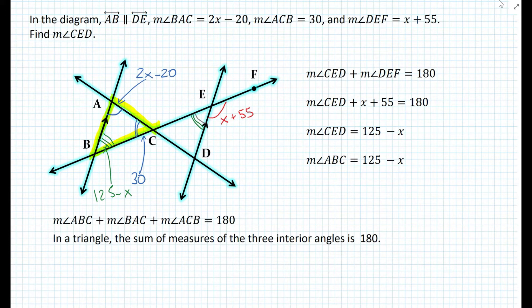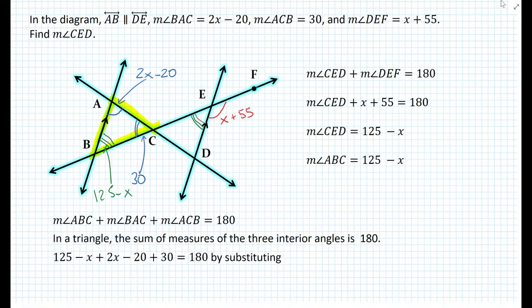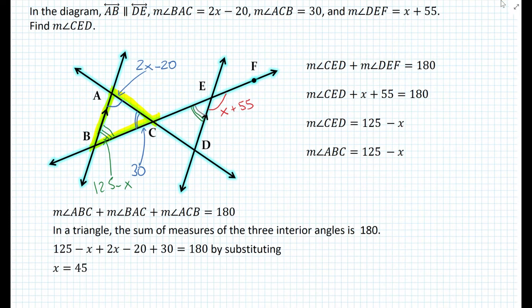That's something we learned in the previous video. So at this point, all we need to do is substitute the values. We obtain 125 minus x plus 2x minus 20 plus 30 is equal to 180. Bringing all the unknowns to the left and the constants to the right, we obtain a value of x equal to 45.